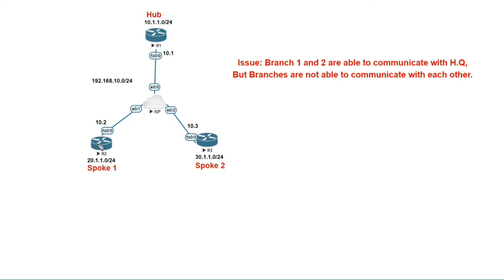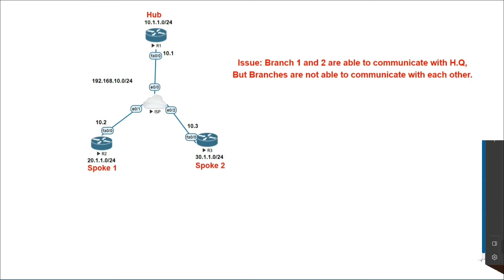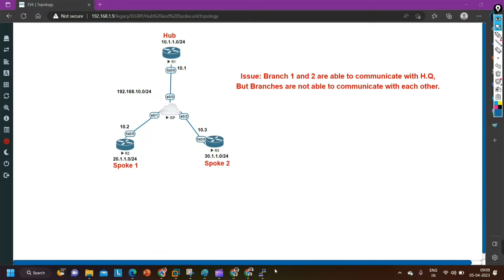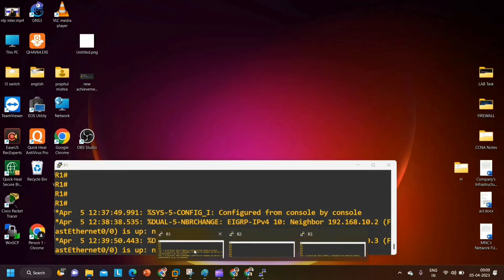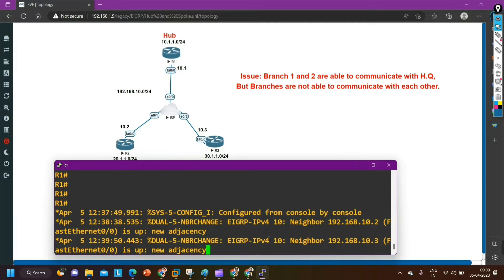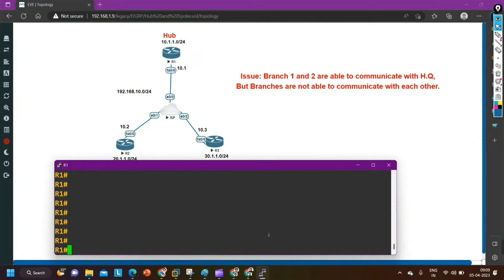In spoke one I have created one loopback — this loopback is running LAN 20.1.1.0/24. On branch two I am running a loopback, which is nothing but your LAN, that is 30.1.1.0/24. On the hub router this is your LAN 10.1.1.0/24. Users from these networks are able to communicate with each other, but the user from the 20 network is not able to communicate with the 30 network. Let me verify that branches are not able to communicate.